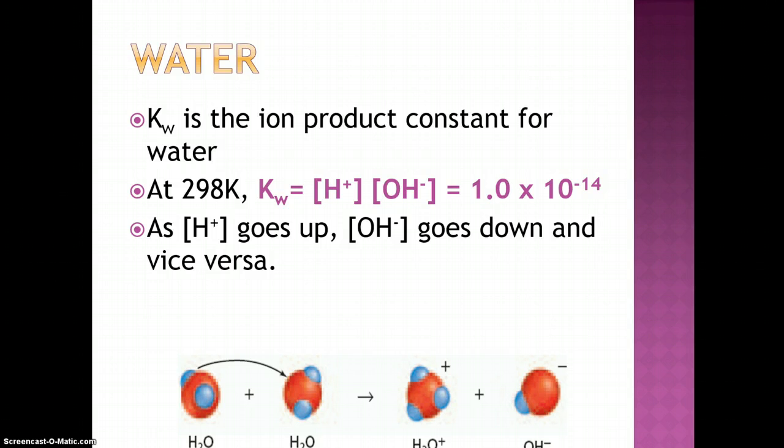Since the product of the hydrogen ion and hydroxide ion concentration always equals 1 times 10 to the negative 14th, if the concentration of the hydrogen ion increases, the concentration of the hydroxide ion must decrease, and vice versa.